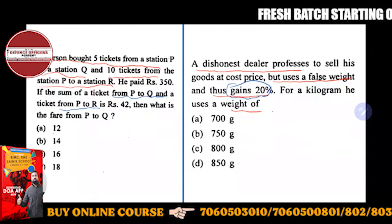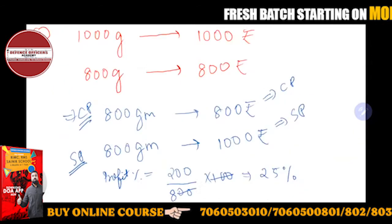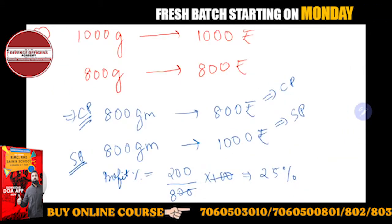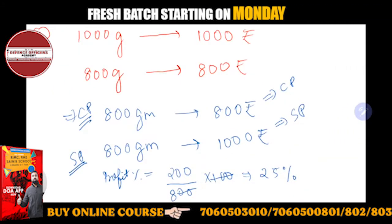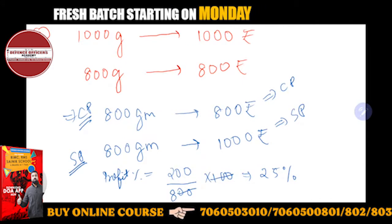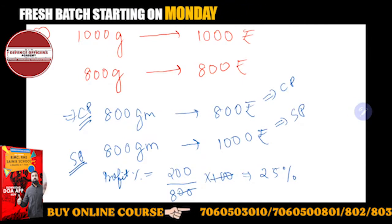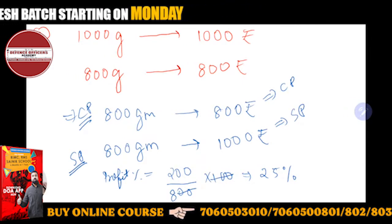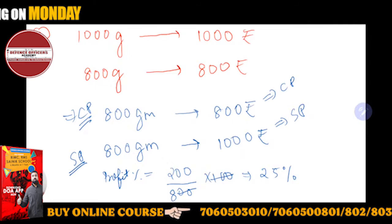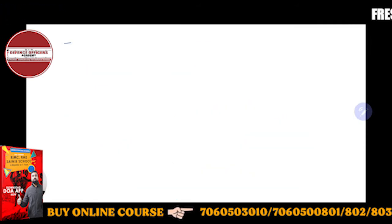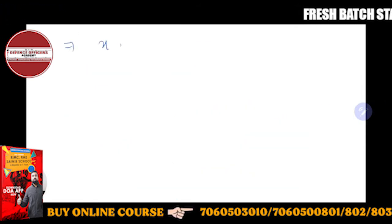Now let me show you how to approach this correctly. We need to find exactly how much profit — we need to find it in the context of 20% profit. Some students may try 850 grams, but let's take it properly. Suppose x grams.